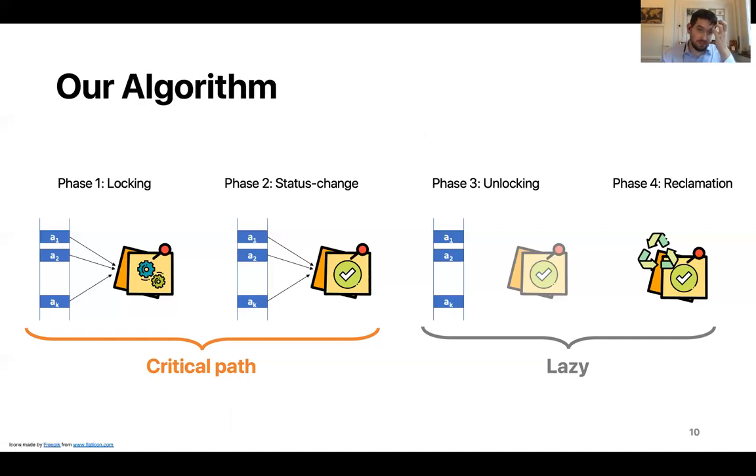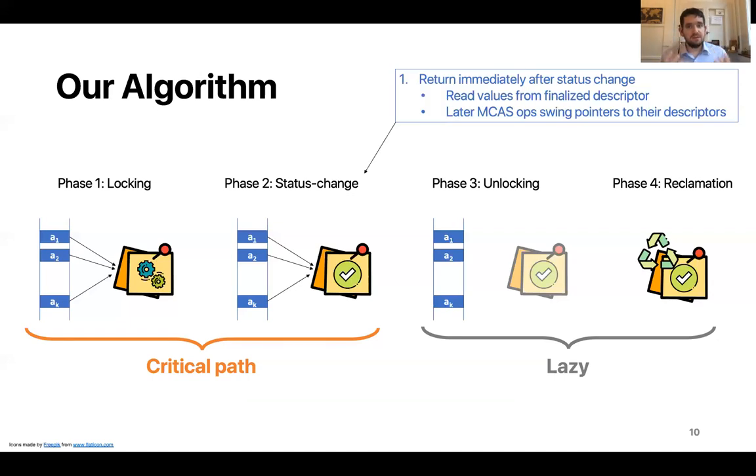Let's see a bit more details about that. So in our algorithm, like I said, MCAS operation returns immediately after the status change phase. And this means that later operations will encounter this configuration in which we have addresses that are acquired by a finalized descriptor. So let's see how these operations react to this situation. A read operation, let's consider a read that is concerned with A1. So we want to read from A1 and A1 points to the descriptor that is finalized as successful. Well, we can simply return the new value from inside the descriptor. And similarly, if the descriptor had been failed, then we could have returned the old value or the expected value from inside the descriptor. So that was reads.